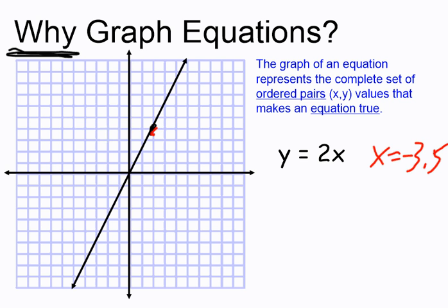And this holds not just for the integers, but for anything we could plug in. So if x is equal to -3.5, for example, y is going to be equal to 2 times -3.5, which is -7.